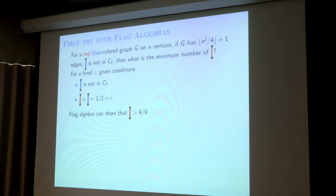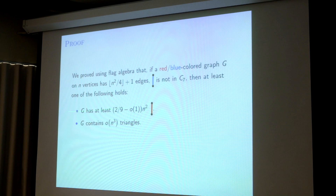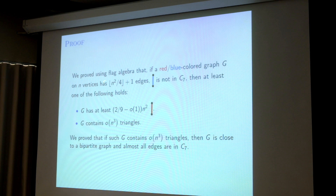In the first case we are done. In the second case, you can show that because it has little-o of n³ triangles and n²/4 + 1 edges, using these two conditions we show that G is very close to a bipartite graph. Almost all edges are in C7. And almost all edges is definitely more than 2n²/9. So we have the proof.